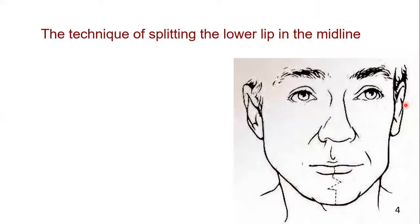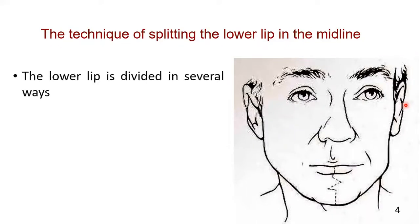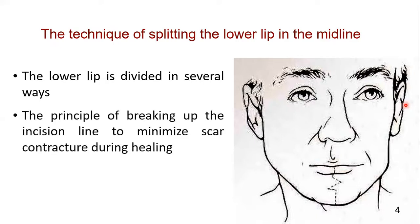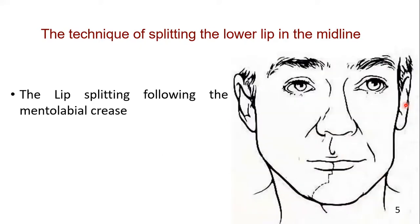Surgical splitting of the lower lip is another maneuver occasionally used in combination with incisions in the sub-mandibular area to increase exposure to one side of the mandible. It is possible to divide the lower lip in several ways. Each method uses the principle of breaking up the incision line to minimize scar contracture during healing. The incision can be connected to sub-mandibular incisions on either side.